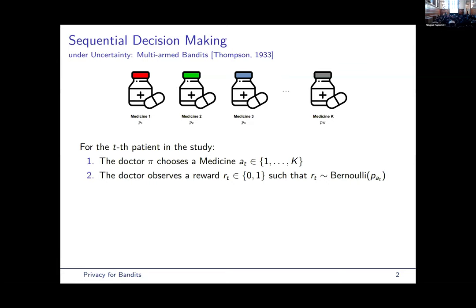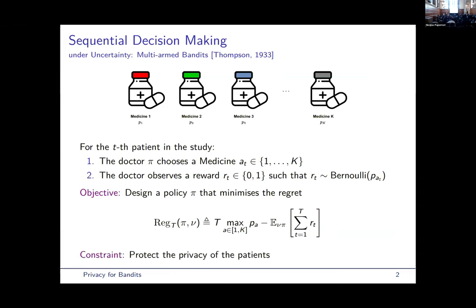so a reward of one if the patient is cured and zero otherwise. The goal is to design a policy, so an action-choosing strategy, that maximizes the sum of rewards or equivalently minimize the regret. And the constraint is that we want to achieve this goal while protecting the privacy of the patients.